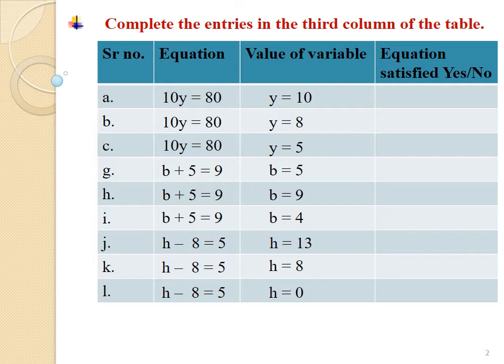Sum A. The equation given to us is 10Y equals 80. This equation has two sides: left hand side and right hand side. On the left hand side, 10Y is given to us. The value of variable Y given to us is 10.